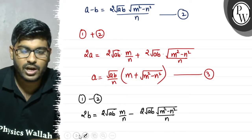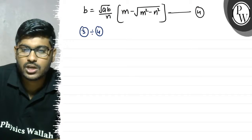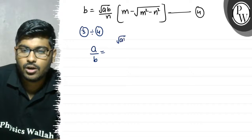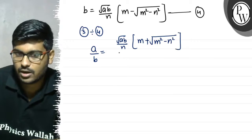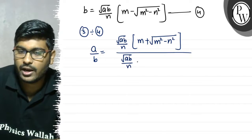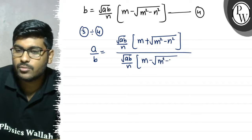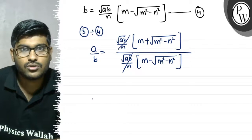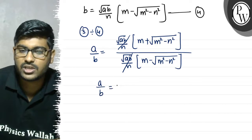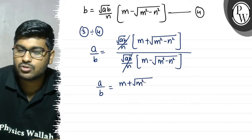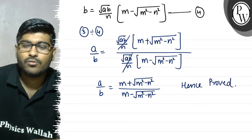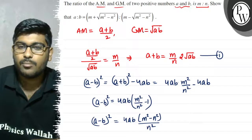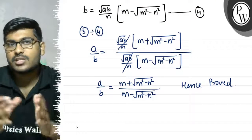Now we divide equation 3 by equation 4. So a by b is equal to: root(ab) over n into (m + root(m² - n²)), divided by root(ab) over n into (m - root(m² - n²)), which simplifies to (m + root(m² - n²)) : (m - root(m² - n²)). So this is the explanation for this question.